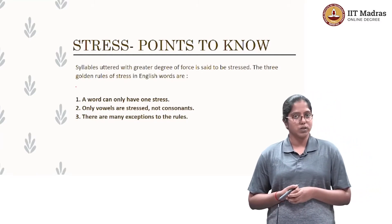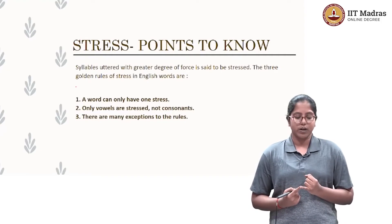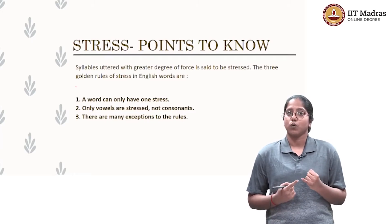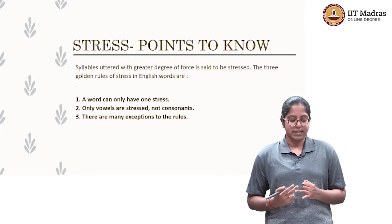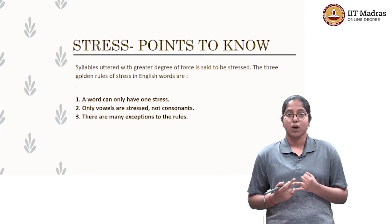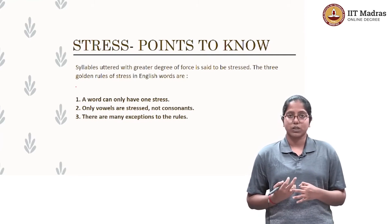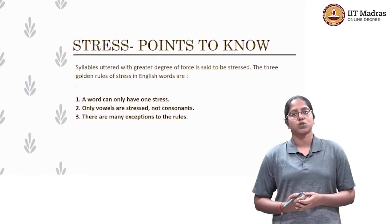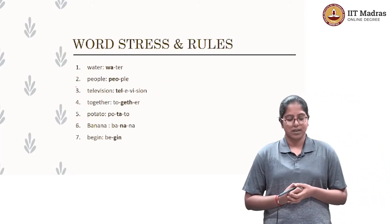The three golden rules of stress in English are: first, a word can have only one stress. Second, only vowels are stressed, not consonants. And third, there are many exceptions to these rules. Keep these in mind as we get started with word stress and rules.